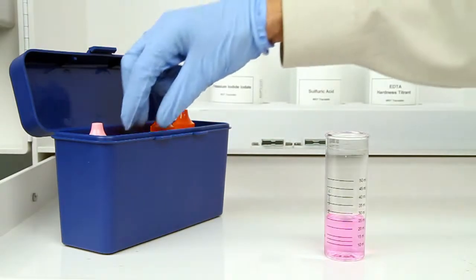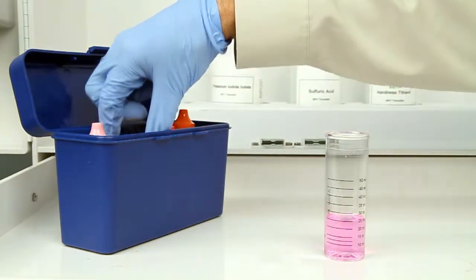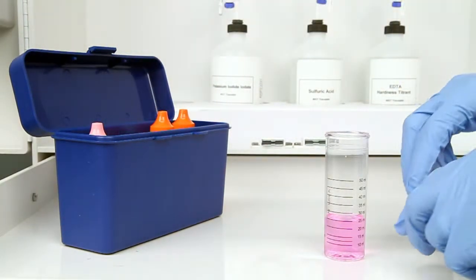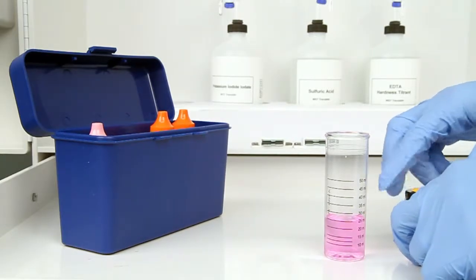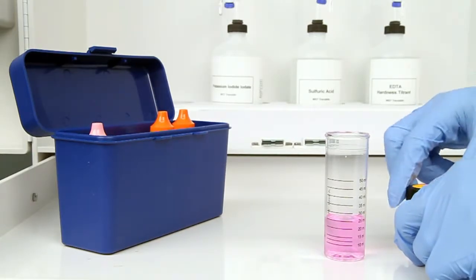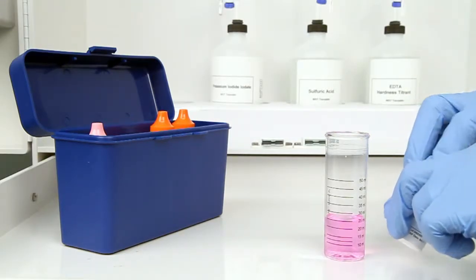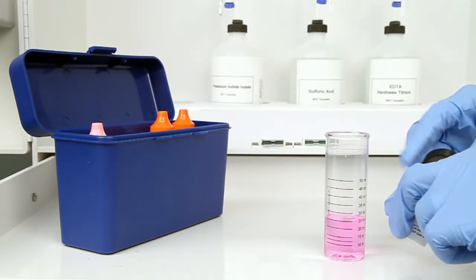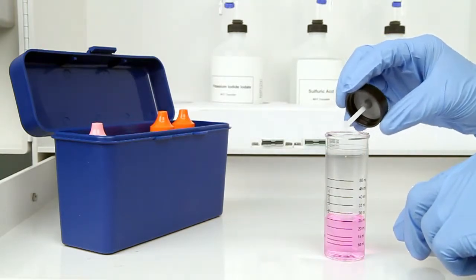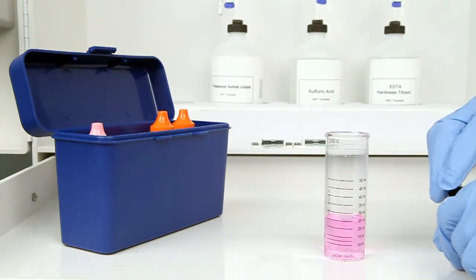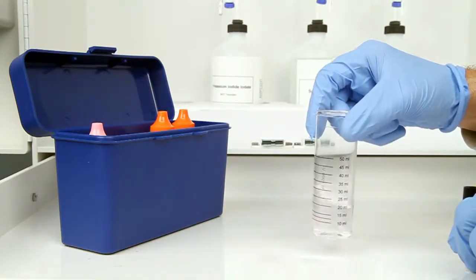The next step according to the endpoint ID procedure is to add the starch acid powder one scoop at a time until the sample is changed from pink to colorless. It's important to swirl the vial after each scoop to make sure the powder is completely dissolved.